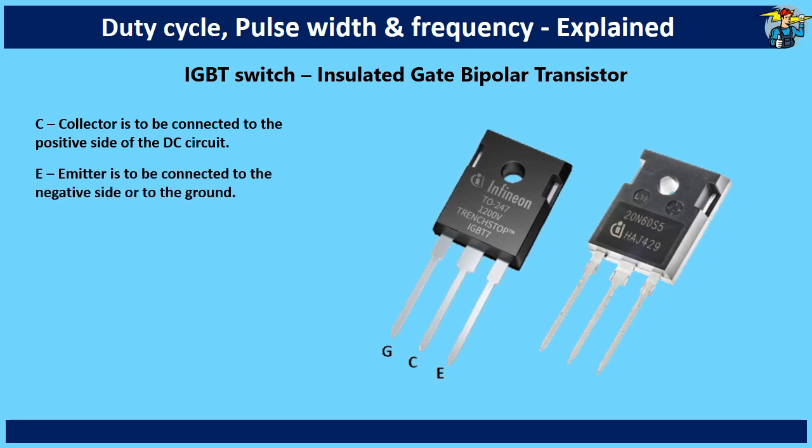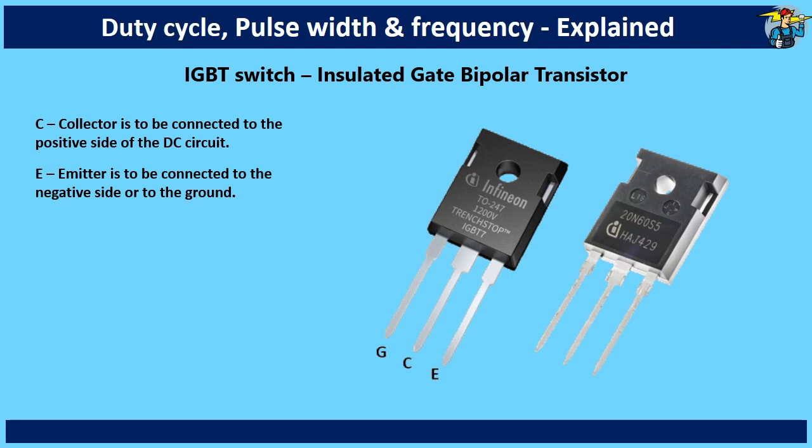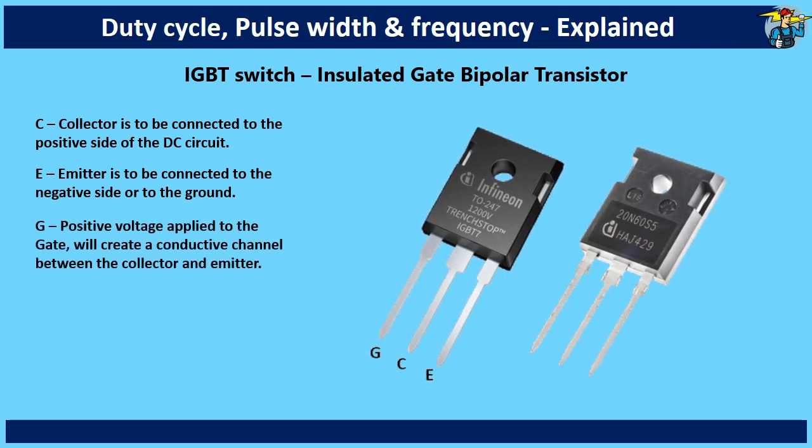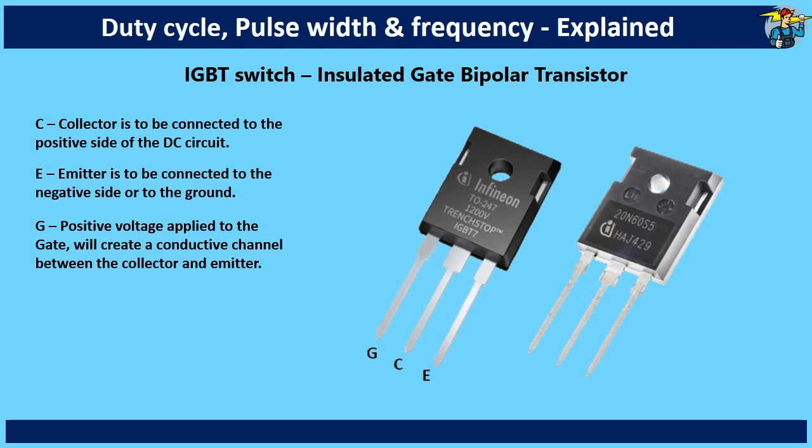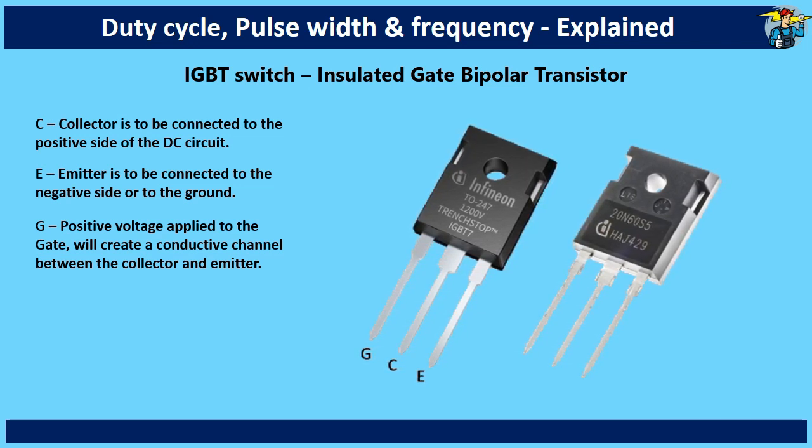E is the emitter and is to be connected to the negative side or to the ground. G is the gate, and when positive voltage is applied to this gate, it will create a conductive channel between collector and emitter, allowing current to flow through the channel.